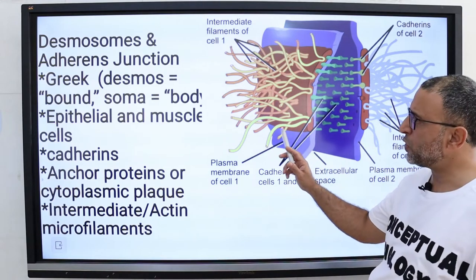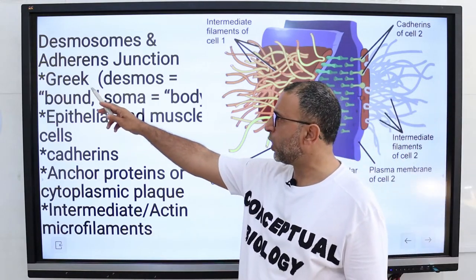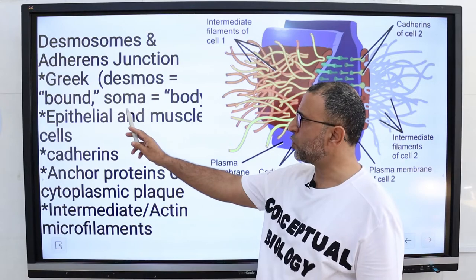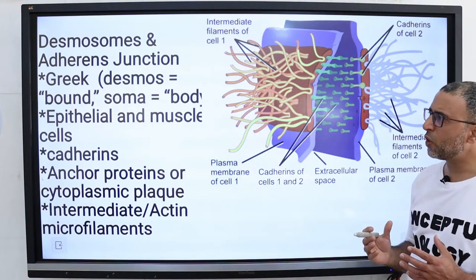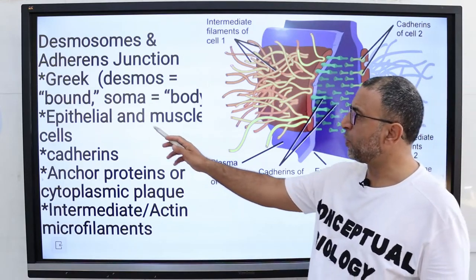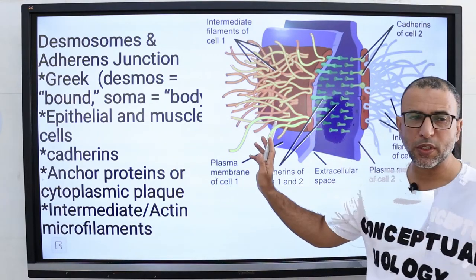The term desmosome originated from two ancient Greek words, desmos and soma. Desmos means bound and soma means body. Desmosomes are present in epithelial cells and muscle cells.